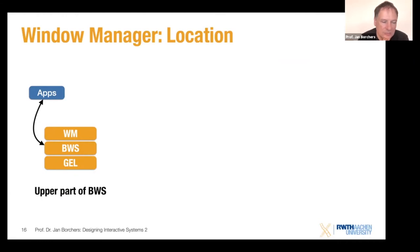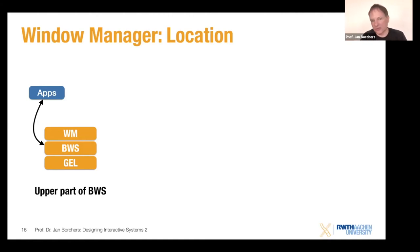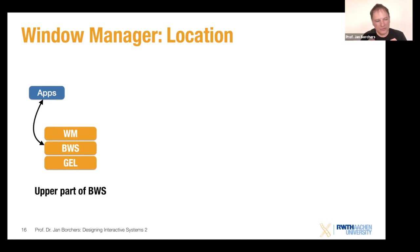The window manager could be placed in the upper part of the base window system, meaning it is essentially a client of the base window system that uses its access functions. This saves a lot of communications overhead because the window manager is in the same address space, the same process — maybe a separate thread — so you can use simple method calls and shared memory. But this tends to blur the boundaries and makes it less flexible, because it's harder to pull such a window manager out and replace it with a different one if you want a completely different look and feel.